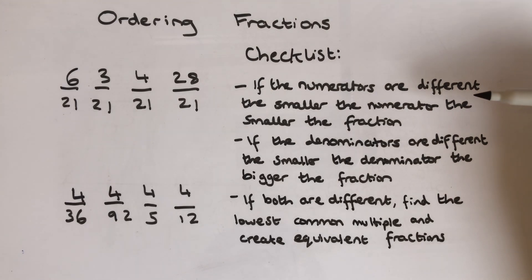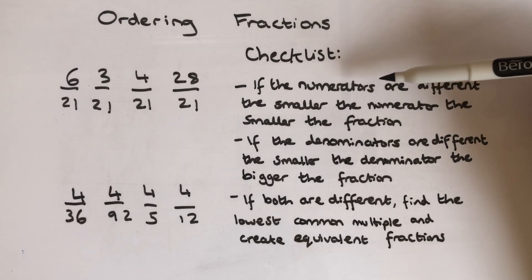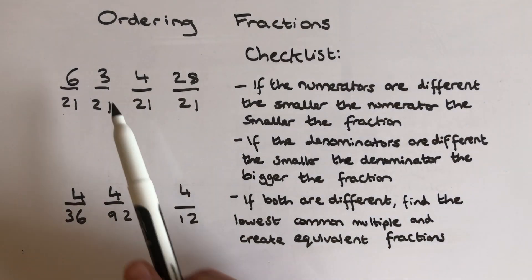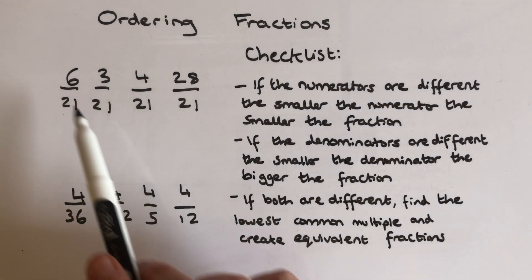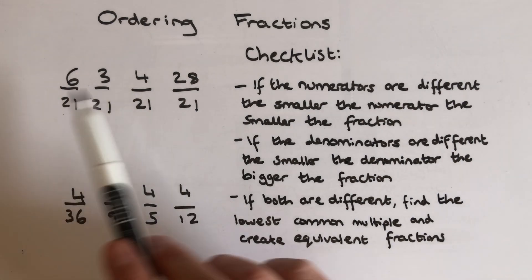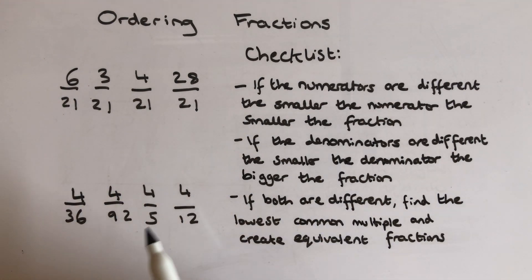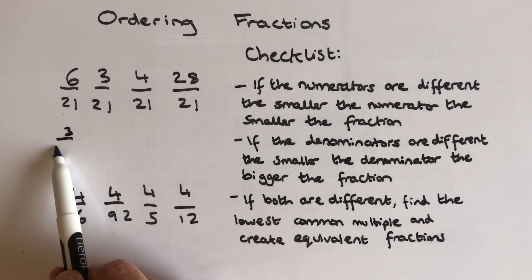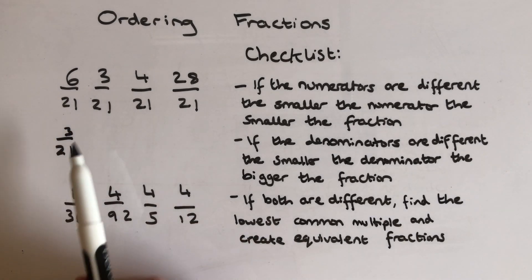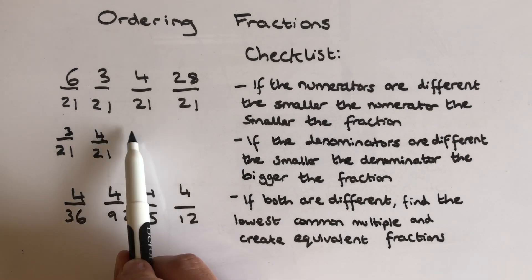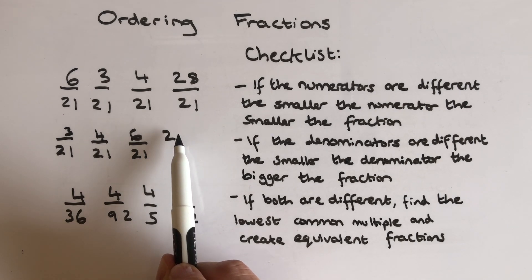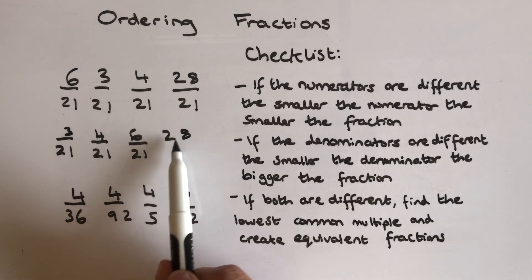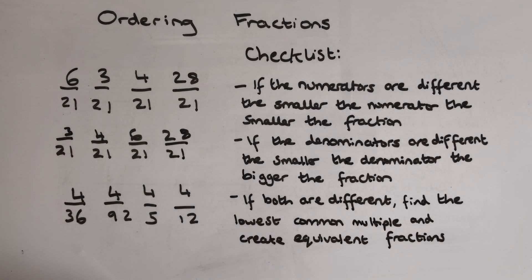If we look at our checklist, it says if the numerators — so that's the top numbers — are different, the smaller the numerator, the smaller the fraction. So if I do this first line here, all my bottom numbers are the same but my numerator is different. So 3 over 21 will be the first one, it's the smallest, then 4 over 21, then 6 over 21, and the largest will be 28 over 21, which is actually an improper fraction. So numerators is quite easy to do.